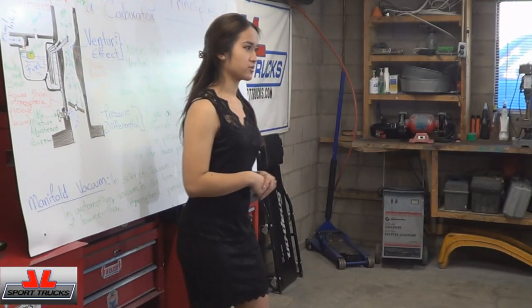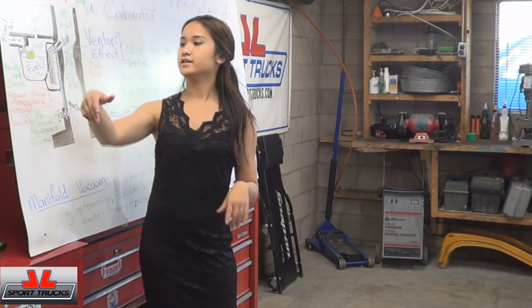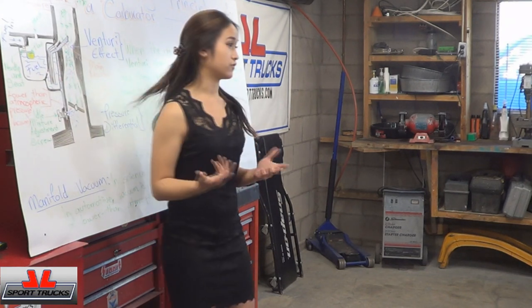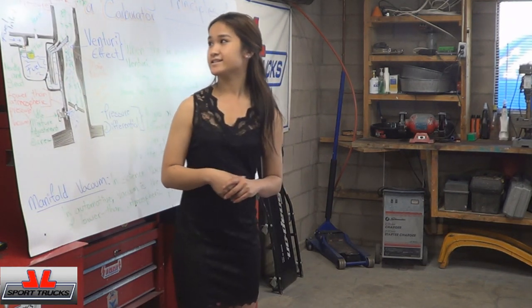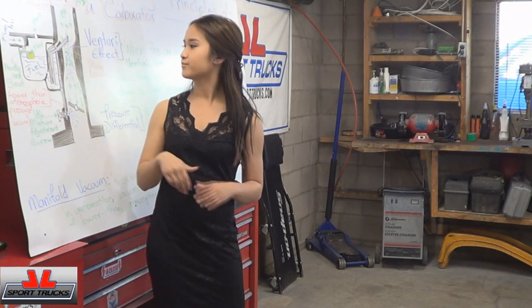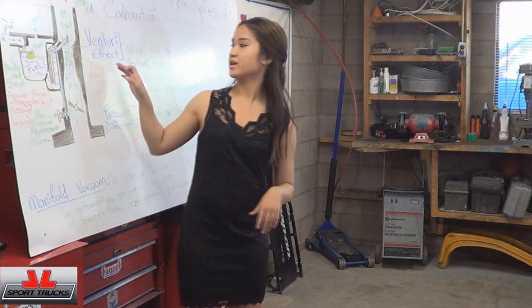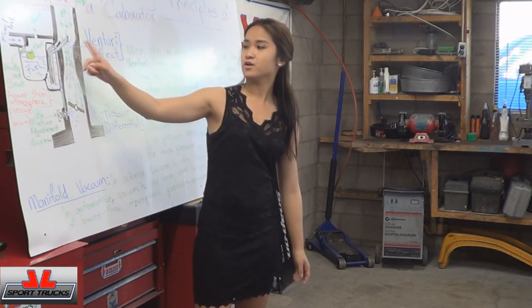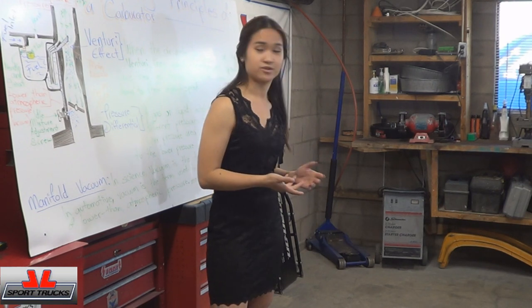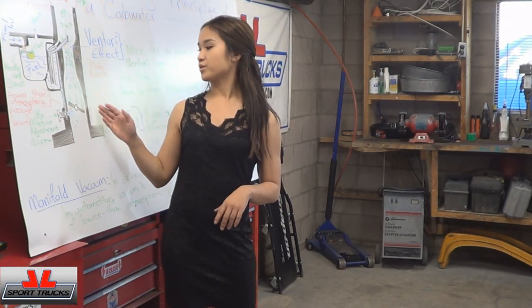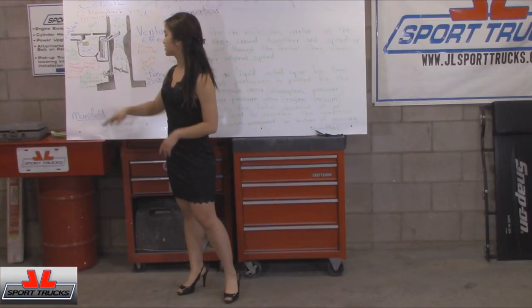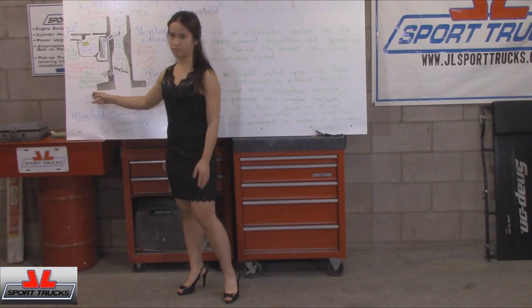The parts are going to be the fuel line, needle and seat, the fuel bowl, the float, and the vents. The air intake is going to be the main nozzle, which is basically like the straw I explained to you. And then the throttle plate, and last is going to be the idle mixture screw.